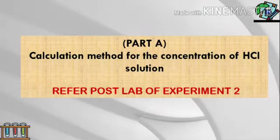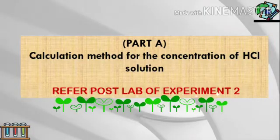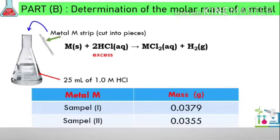Part B is determination of the molar mass of a metal. We have a metal M strip that we cut into pieces and add to 25 mL of 1.0 molar HCl that we pipetted before. This is the equation that involves the metal solid reacting with HCl aqueous solution to form MCl2 aqueous and hydrogen gas.